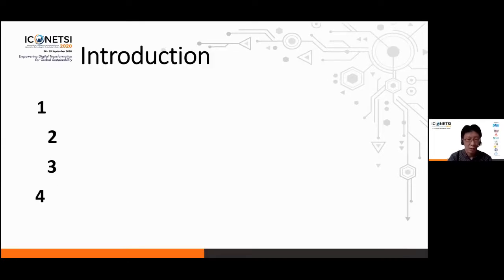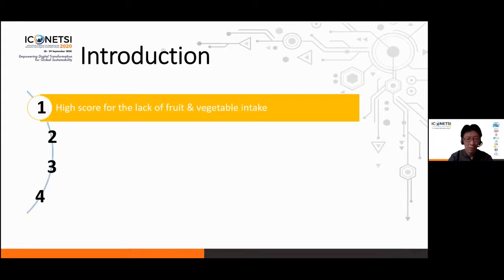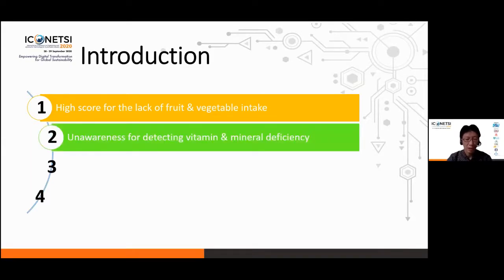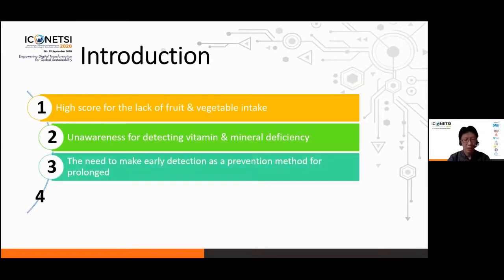Let's start with the introduction. In this section, I will explain about the motivation of this research and some previous works related to the experiment. The first point is that many Indonesian people lack consumption of fruit and vegetables, which leads to vitamin and mineral deficiency. The awareness of the people oftentimes triggers some disease as a result of prolonged deficiency. Therefore, we need some prevention method, like an application to make early detection of vitamin and mineral deficiency.